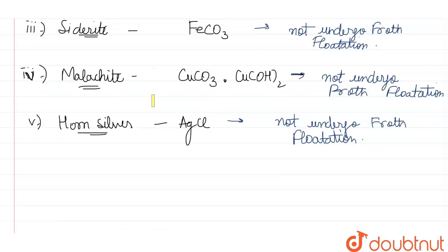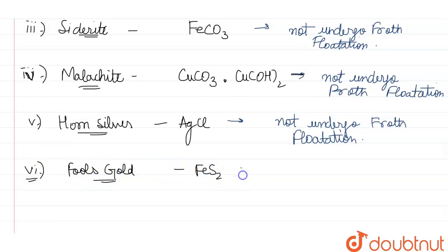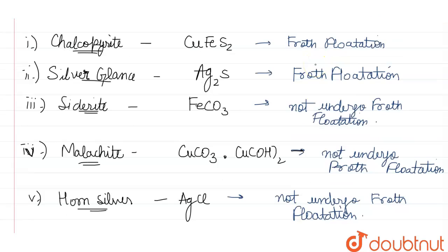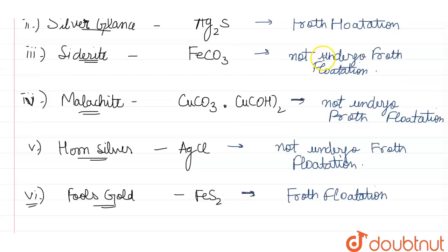The last one is fool's gold. The formula of fool's gold is FeS₂. Fool's gold is also a sulfide ore, therefore it will undergo froth flotation.